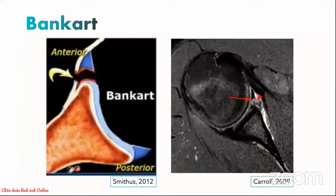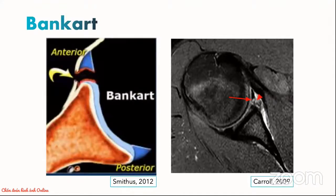The Bankart lesion is the classical labral ligamentous complex injury after an anterior inferior shoulder dislocation. This involves avulsion of the anterior inferior labrum with disruption of its adjacent periosteal sleeve. The axial MRI image on the right demonstrates this very nicely. The arrow points towards the avulsed anterior inferior labrum, while the arrowhead shows the disrupted adjacent attaching periosteal sleeve.